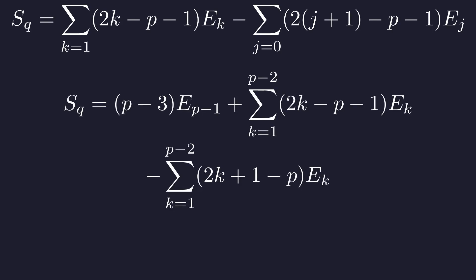Look what we've accomplished: I've isolated the boundary term—that's the (p minus 3) times E_(p minus 1) part—and now we have two very similar sums that we can combine.